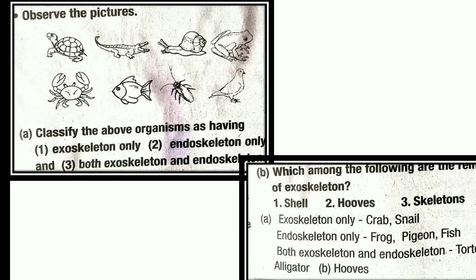This is an important part of this video. Observe the pictures. Classify the above organisms as having exoskeleton only, endoskeleton only, or both exoskeleton and endoskeleton.